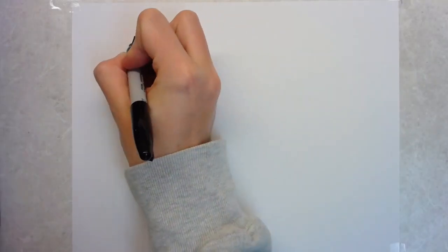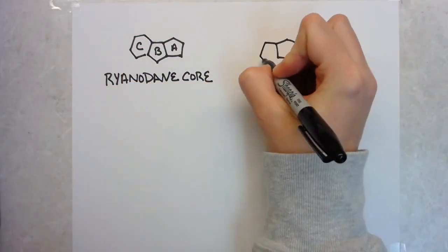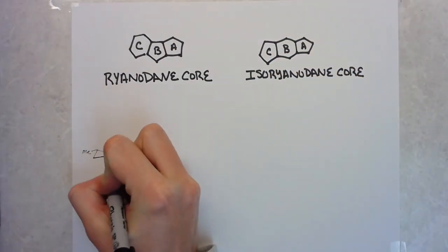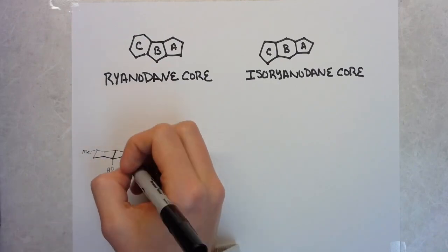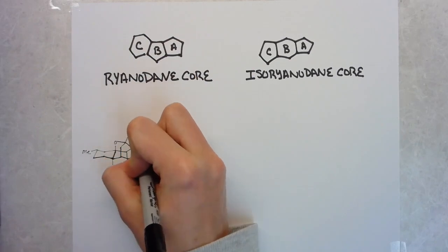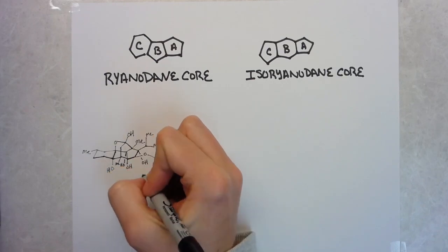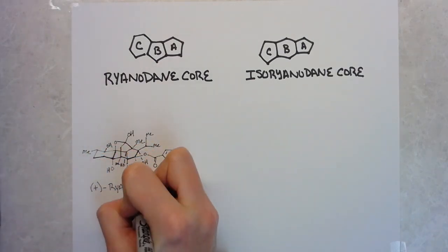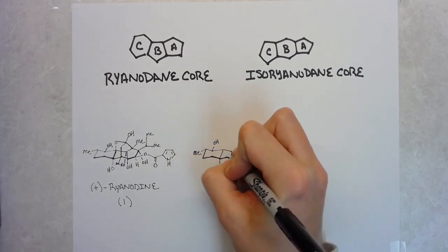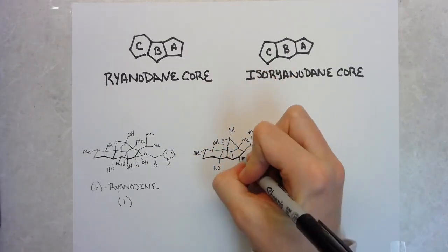So today we're going to talk about Sarah Reisman's recent Nature paper, which is a really efficient synthesis of Percyanol. This natural product is structurally similar to Ryanodal and Ryanodine, which are two products that she made just a few years ago published in Science. Ryanodine and Ryanodal have a core called the Ryanodine core, which is a 655 tricyclic structure with a lot of functional groups dotted along it. There's also the isoryanodine core, which is a 565 core, and that is the family that Percyanol is related to.